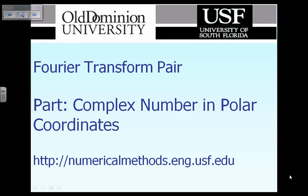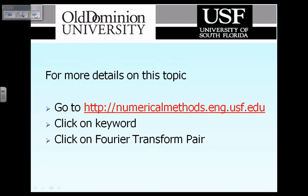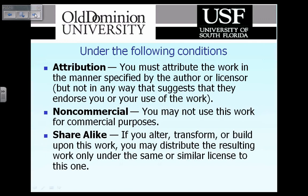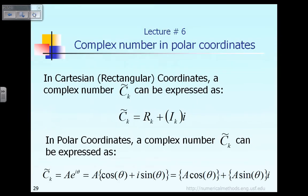In this lecture, we are talking about Fourier transform pair, and complex numbers expressed in terms of polar coordinates. In the Cartesian or rectangular coordinates, any complex number C tilde k can be expressed as the real part R sub k plus the imaginary part capital I sub k times small i. Remember, the definition of small i is that i squared is equal to minus 1.